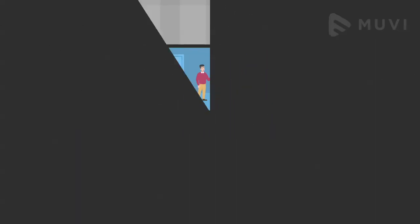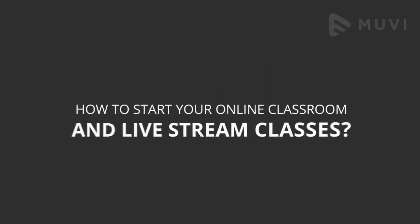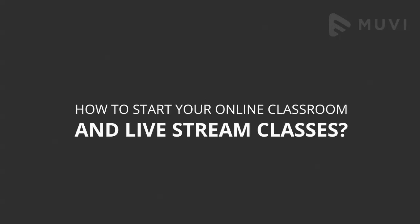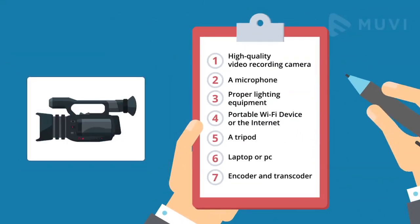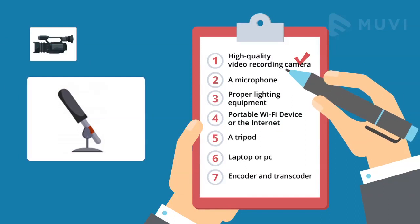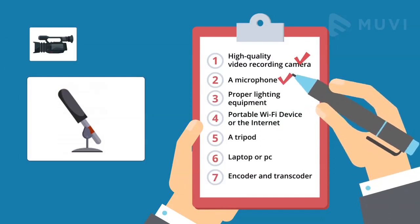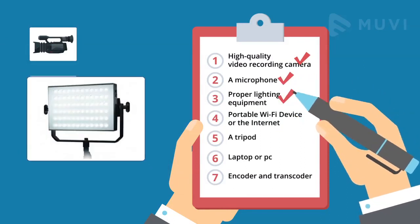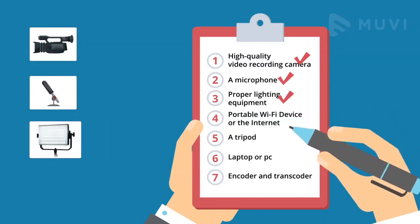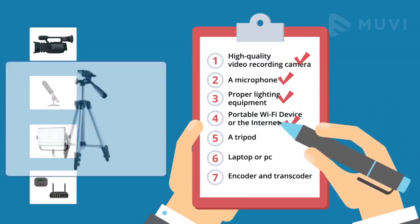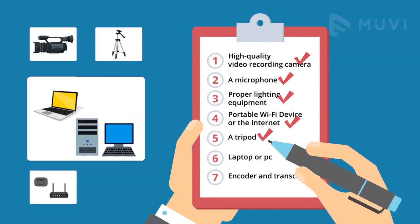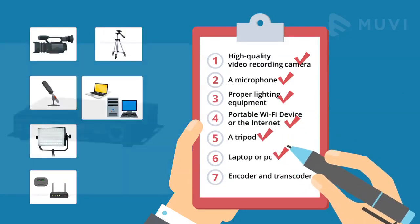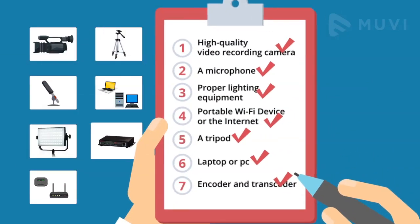Are you wondering how to start your online classroom and live stream classes? Well, you would need basic equipment like a high-quality video recording camera, a microphone, proper lighting equipment, a portable Wi-Fi device or the internet, a tripod, laptop or PC, encoder and transcoder.